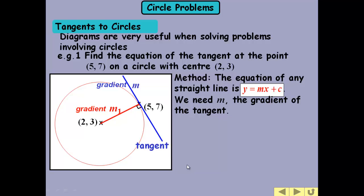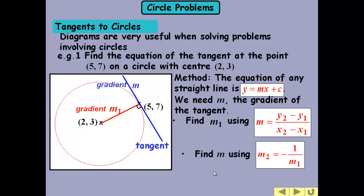So the gradient m₁ is the difference in y over the difference in x. And we can then use, to find the m we need for our equation of the tangent, the fact that it's the negative reciprocal. It's minus 1 over the gradient of this normal, the radius.